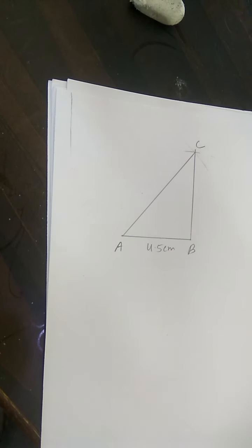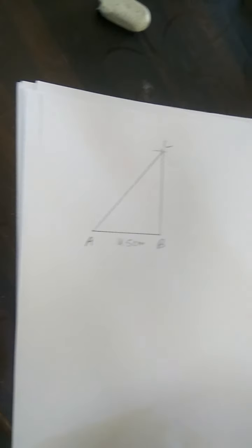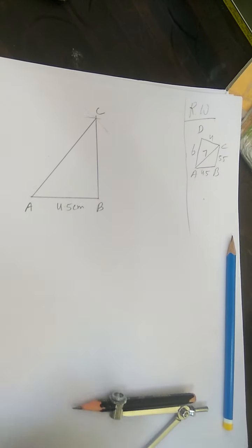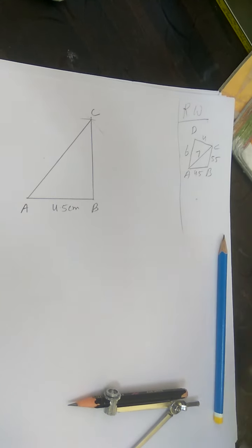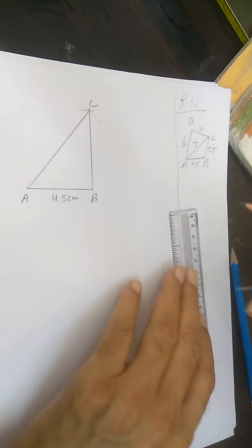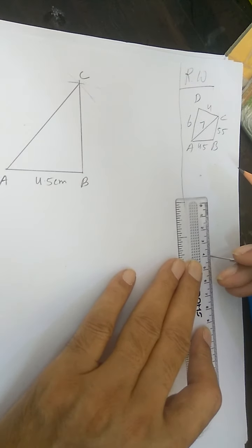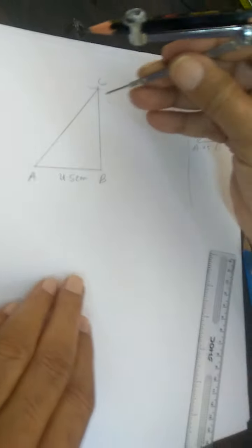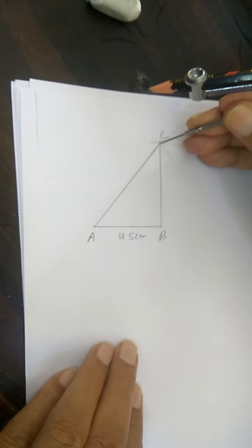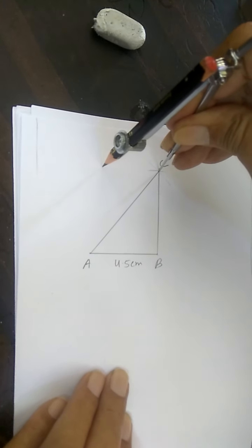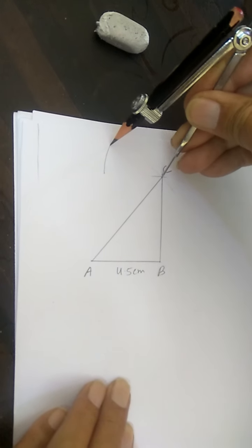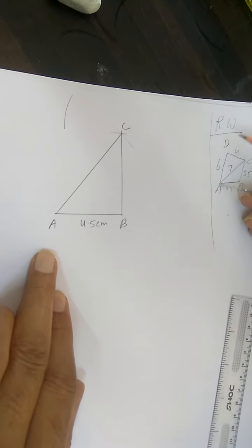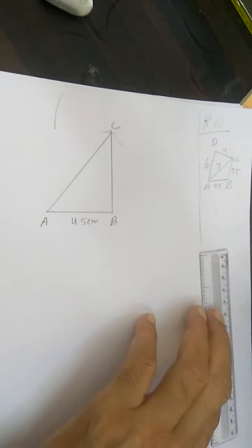Now you have to get the fourth one, that is D. To get D, you have to find out CD, and CD you know is 4 cm. So let's measure 4 cm. This I take up 4. So again, to find out point D, we have to draw two arcs. One, then the other one will be AD. The measure of AD is 6 cm.